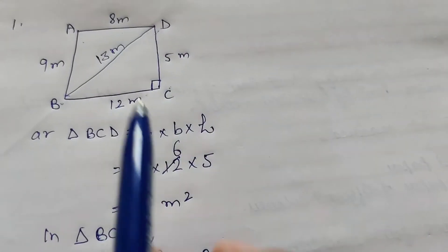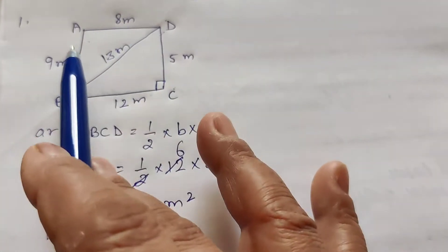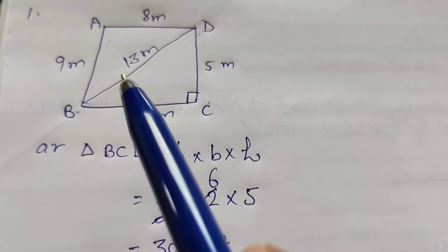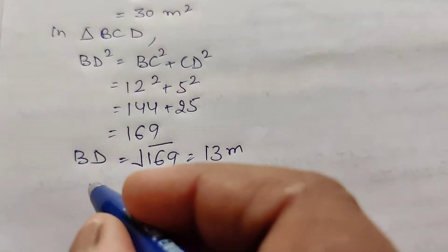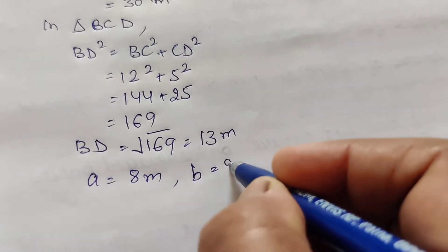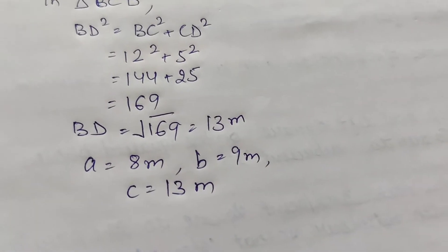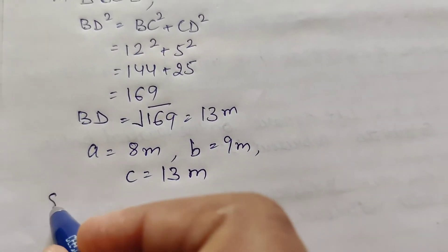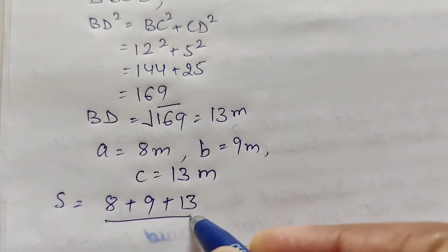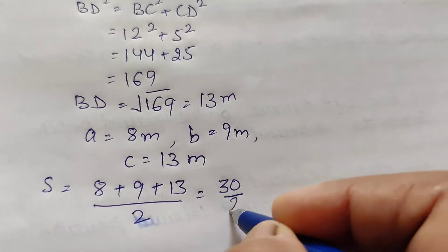Triangle ABD is a scalene triangle, so we find its area using Heron's Formula. A equals 8 meter, B equals 9 meter, and C equals 13 meter. S equals the semi-perimeter: (8 plus 9 plus 13) by 2, which equals 30 by 2, equal to 15.